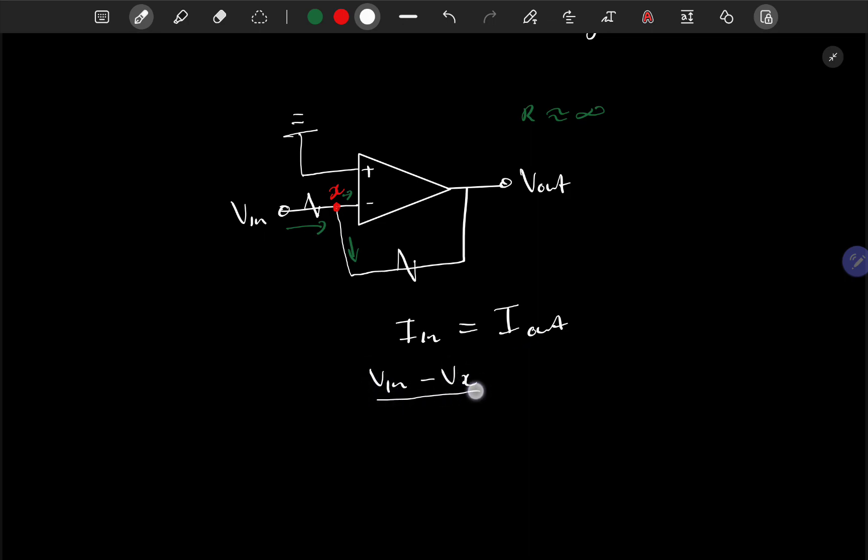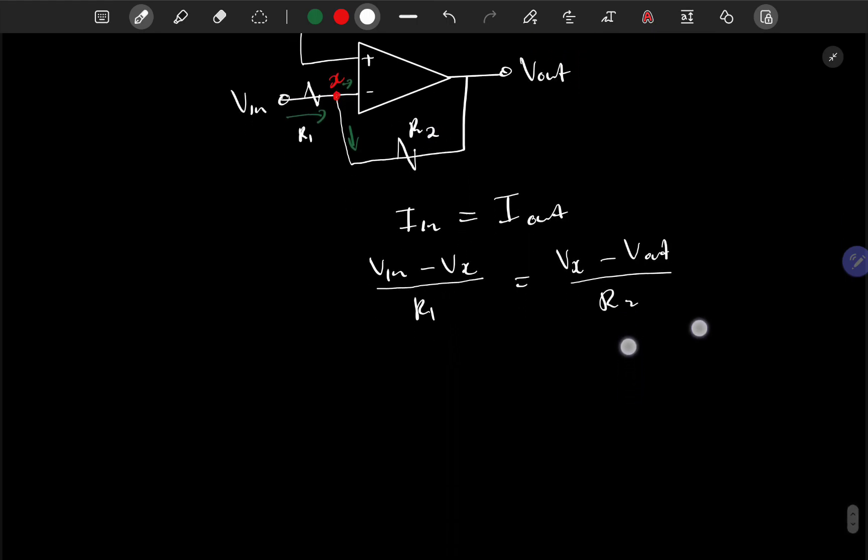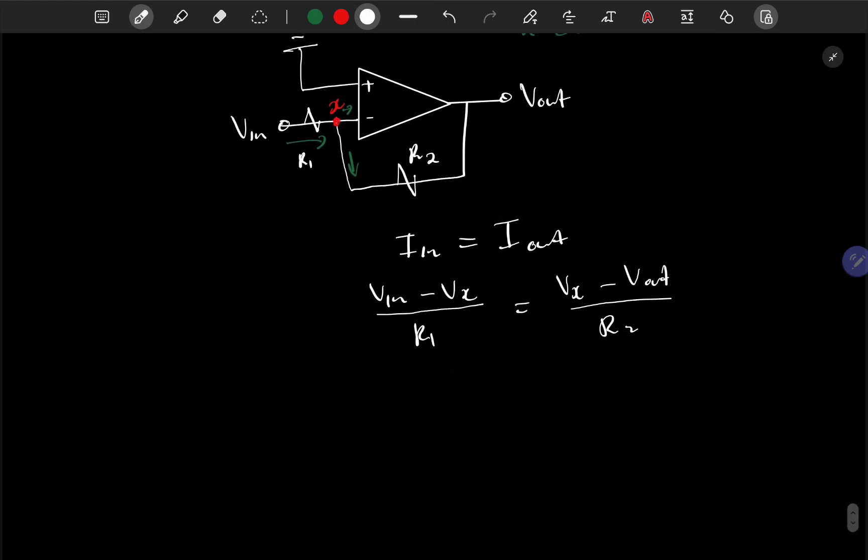All over resistance, let me call this one R1, over R1, should equal Vx minus Vout all over resistance 2, let me call that one R2.